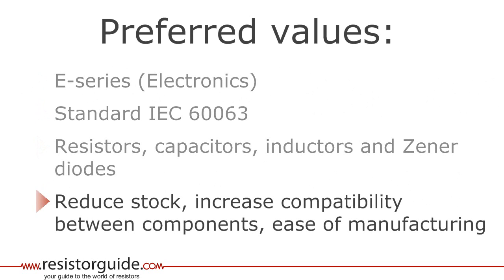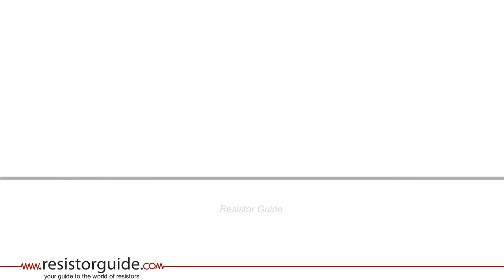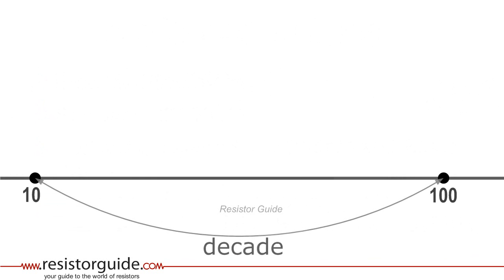The standardization of the values has advantages like the reduction of stock, the increased compatibility between components in a design, and it simplifies the manufacturing workflow. For our example we look at the values between 10 and 100. This interval is called a decade, and it could also have been from 1 to 10, or from 100 to 1000.